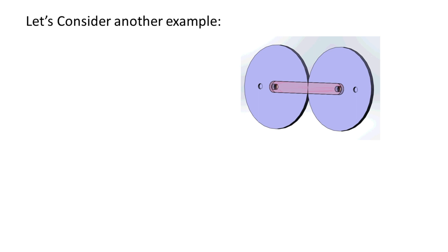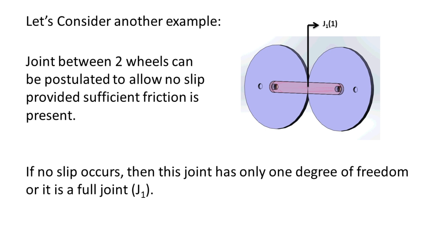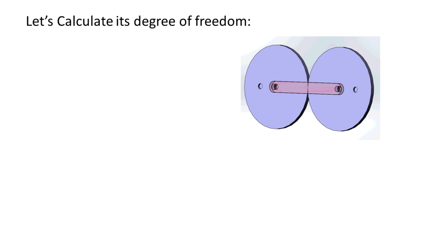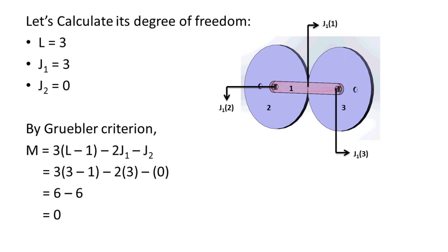For another example, consider a joint between two wheels, which can be assumed to allow no slip provided sufficient friction is present. If no slip occurs, this joint has only one degree of freedom — it is a full joint allowing only relative angular motion between the wheels. This mechanism has 3 links, 3 joints with one degree of freedom, and 0 joints with two degrees of freedom. By the Gruebler Criterion, the degree of freedom computes to 0.